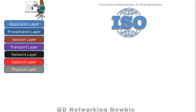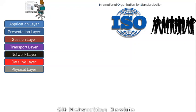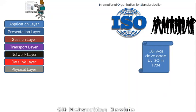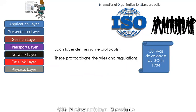Who actually gave us these seven layers? There is an international body called the International Organization for Standardization (ISO), which is an international standard-setting body having representatives from various national standard organizations. This ISO gave us the OSI model in 1984. In this OSI model, each layer defines some protocols — rules and regulations — by which each layer performs some job to make communication between two nodes possible.